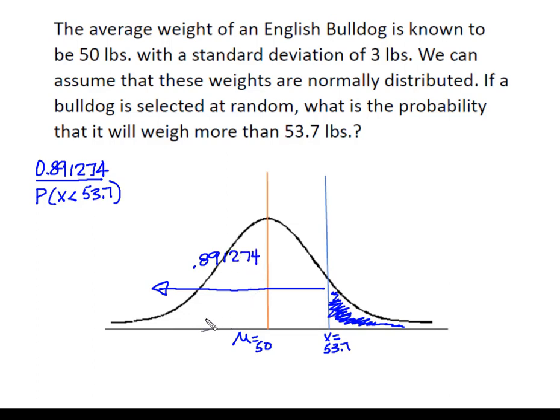I also know from my characteristics of normal distribution that the area from 53.7 and below plus the area above 53.7 is always going to equal 1. So I'm simply going to take 1 minus 0.891274 and that's going to result in a probability of 0.108726.